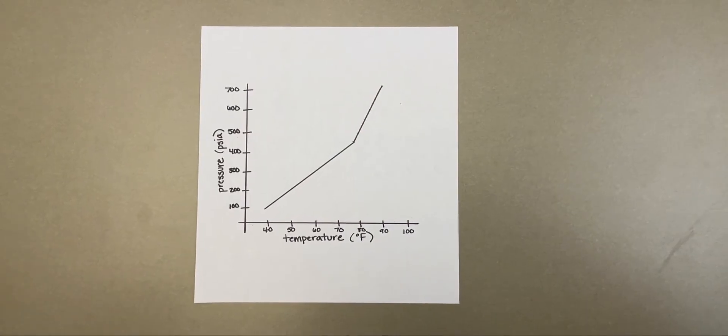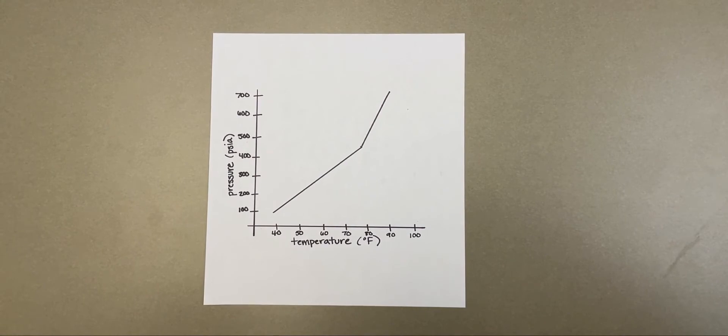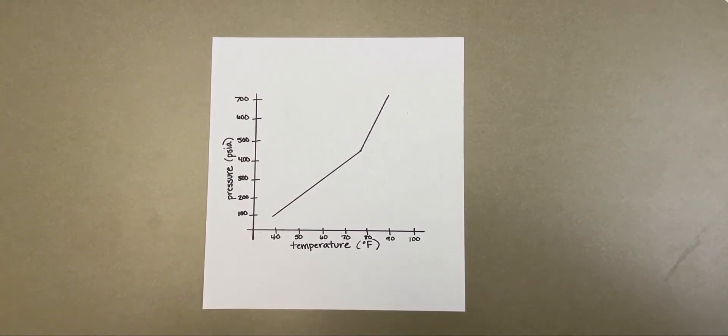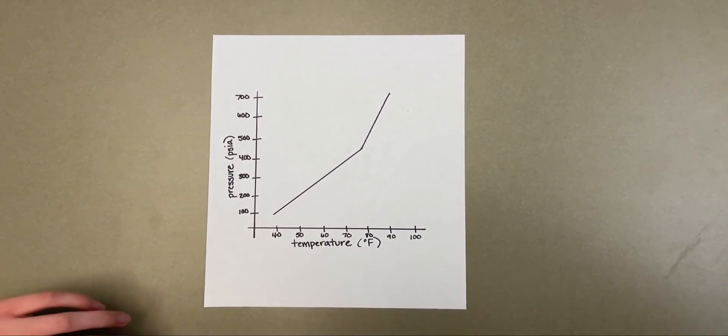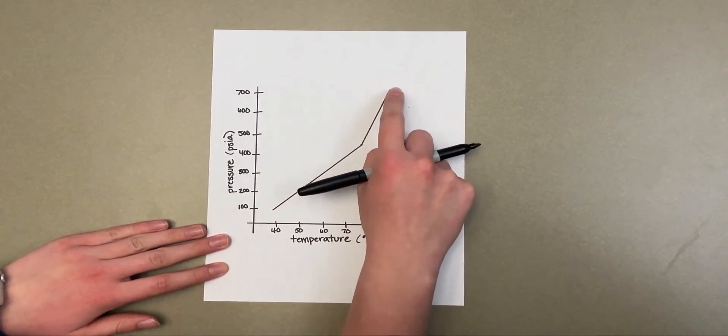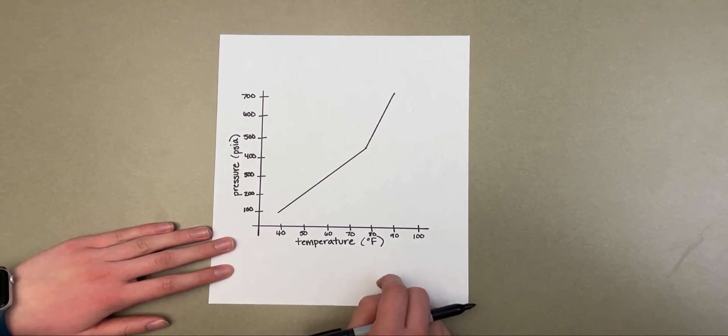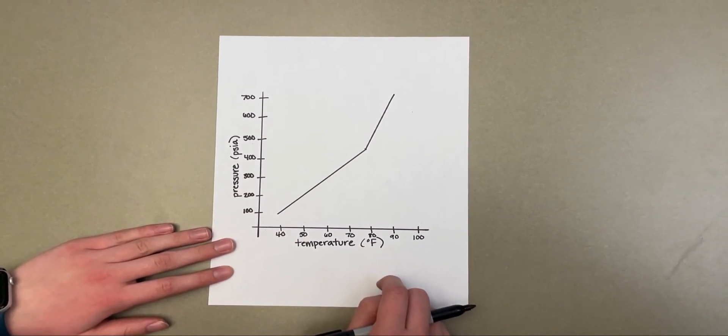Now I'm going to walk through an example of how to determine if you have hydrate forming conditions. For this problem set, we're going to say that we have a 0.7 specific gravity natural gas, and is to be compressed to 500 psi and cooled to 50 degrees Fahrenheit. The big question, is there a possibility of hydrate formation under these conditions?